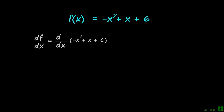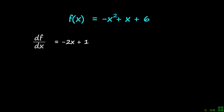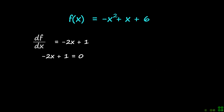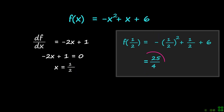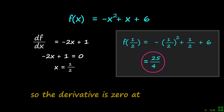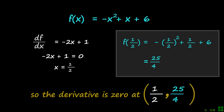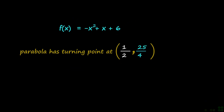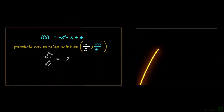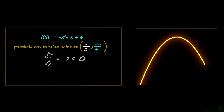Let's find the first derivative. Set this equal to zero and find the value of x. Now substitute this into the given equation in order to find the corresponding y-value. Finally, we found the coordinates of the turning point of the parabola, as shown. Note that the second derivative is negative; therefore the turning point is a maximum point, as shown.